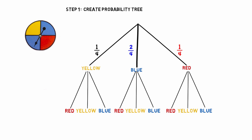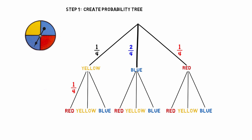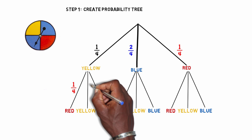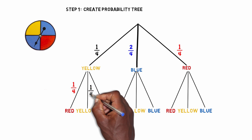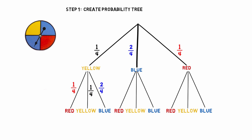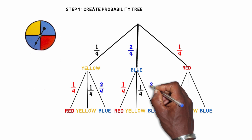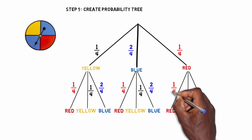What was the probability associated with landing on each color? It doesn't change with your second spin. You still have a one in four chance for red, a one in four chance for yellow, and a two in four chance for blue. So I just repeat those probabilities again for each branch.